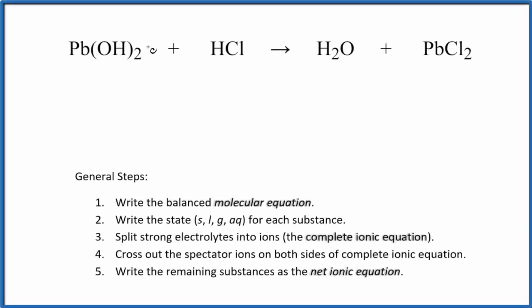In this video, we'll write the net ionic equation for Pb(OH)₂ plus HCl. So we have lead hydroxide plus hydrochloric acid. First thing we need to do with net ionic equations is write the balanced molecular equation.